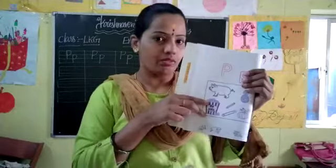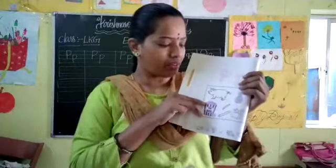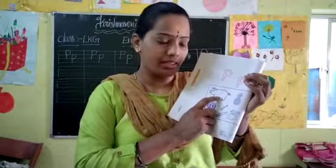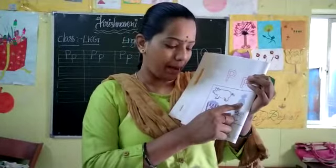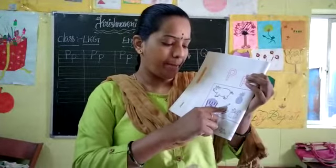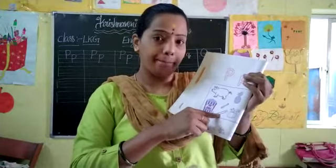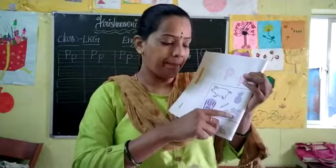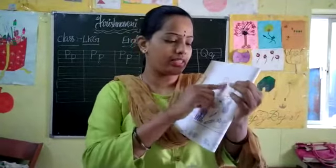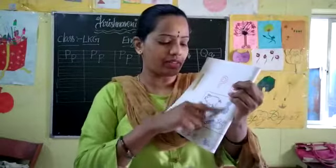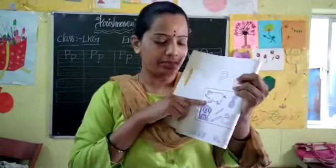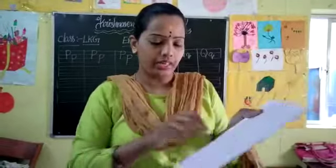See the P for — what are the objects: P for pig, pineapple, popcorn, pencil, pin and pumpkin. This is the letter P. Trace these two letters and afterward color these pictures. Got it.